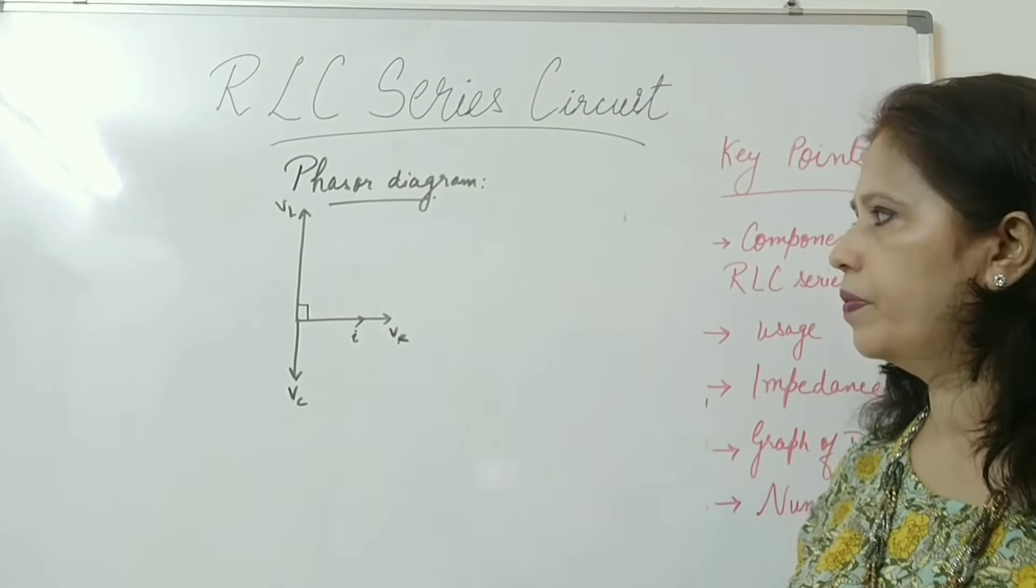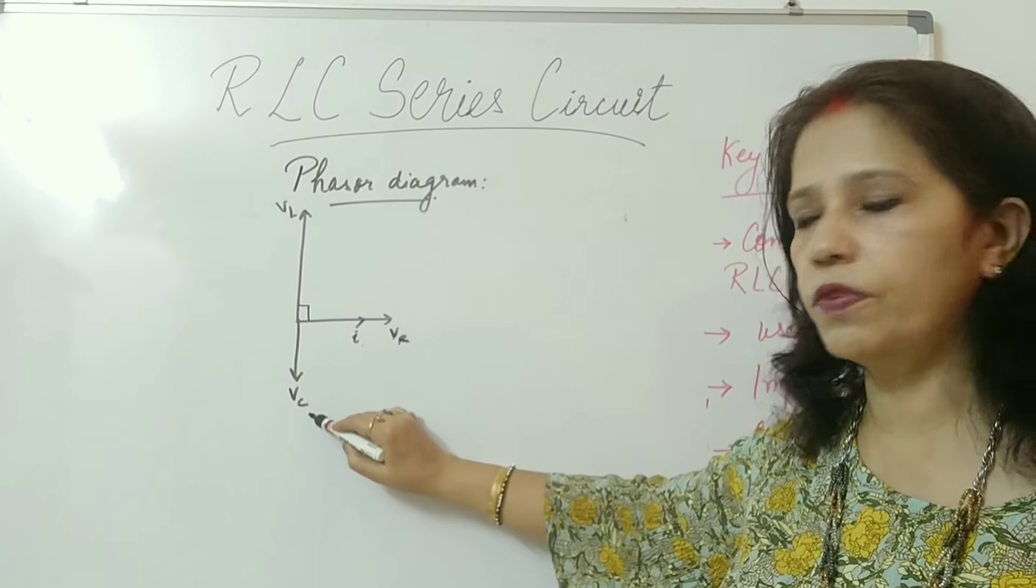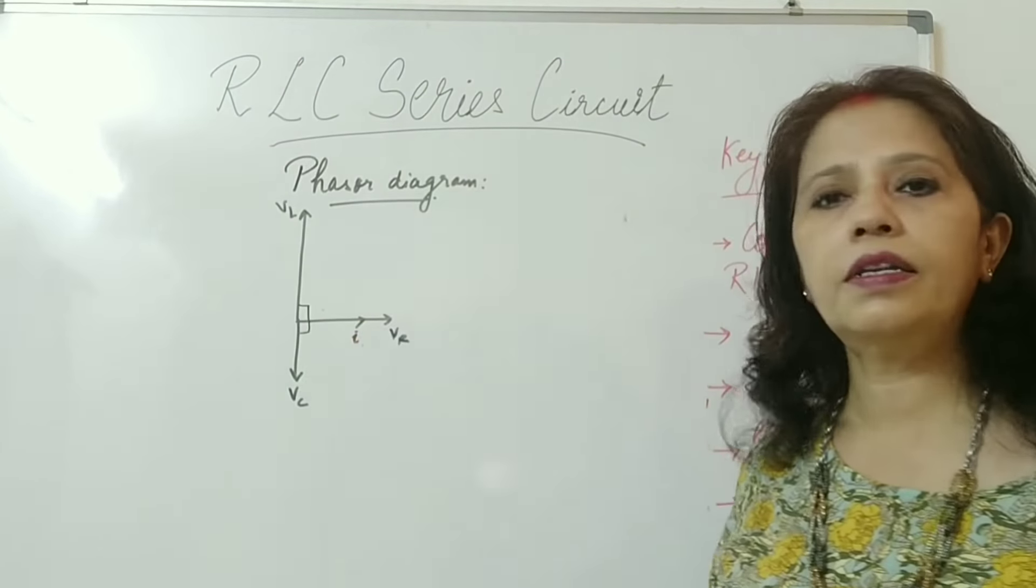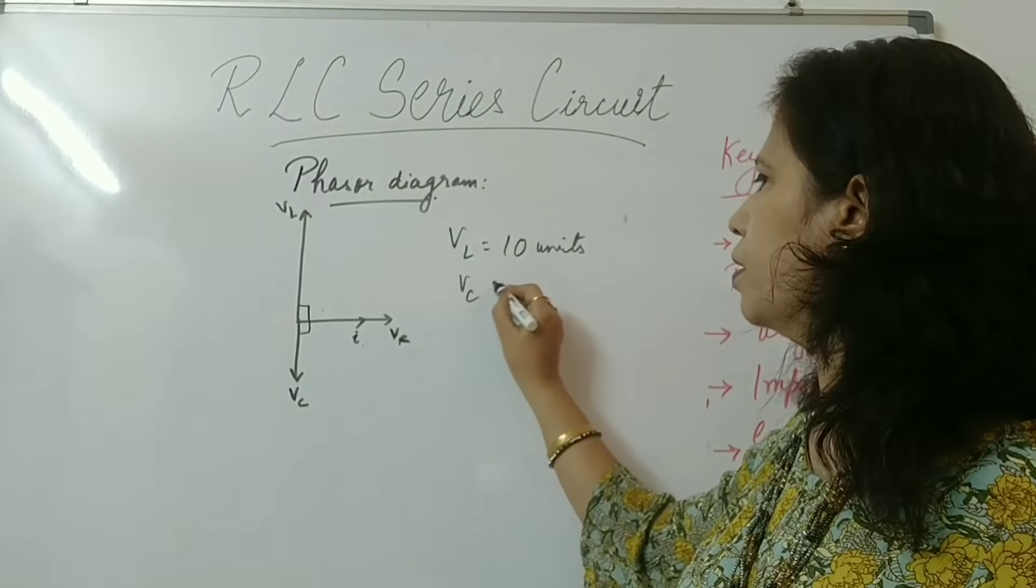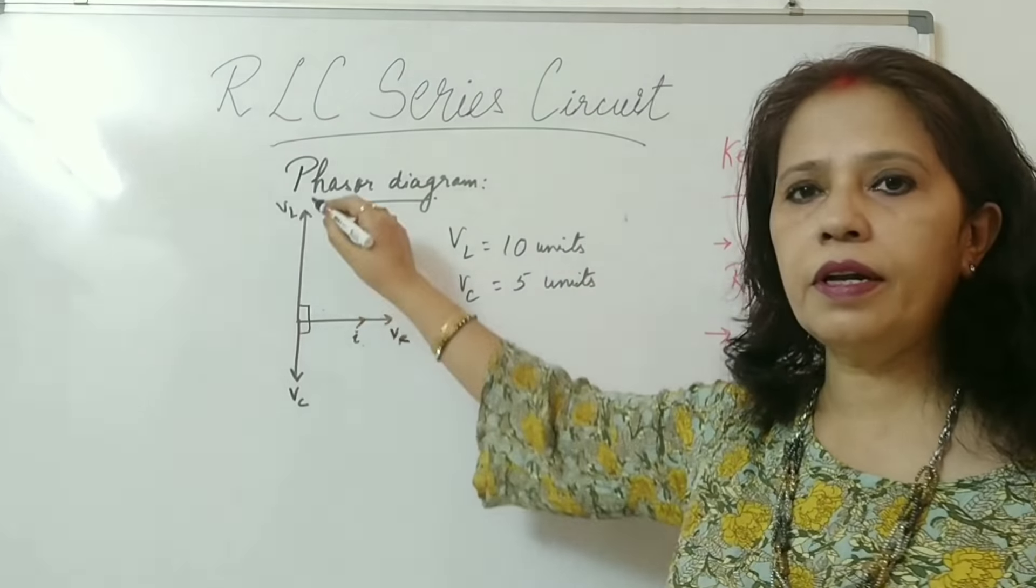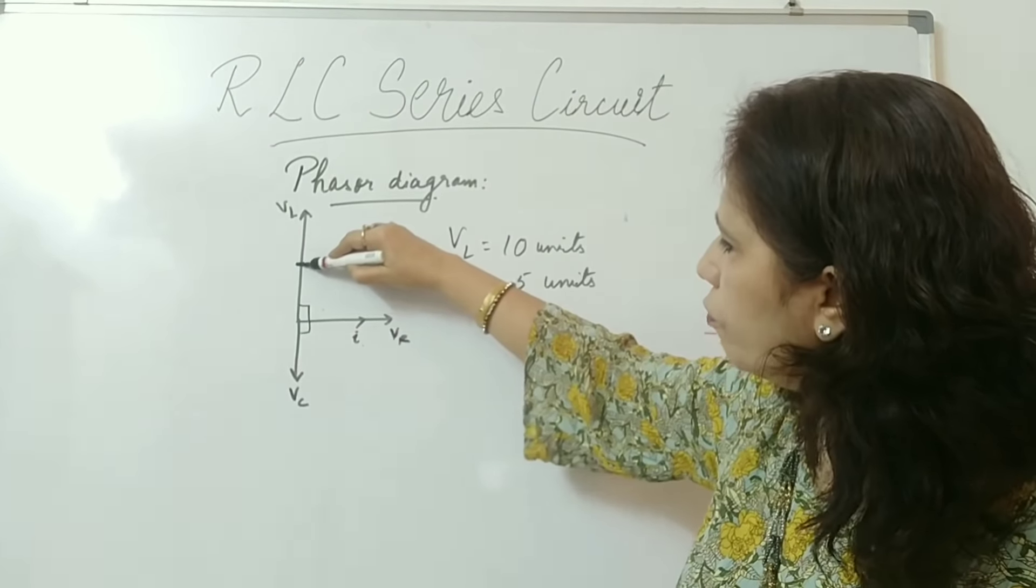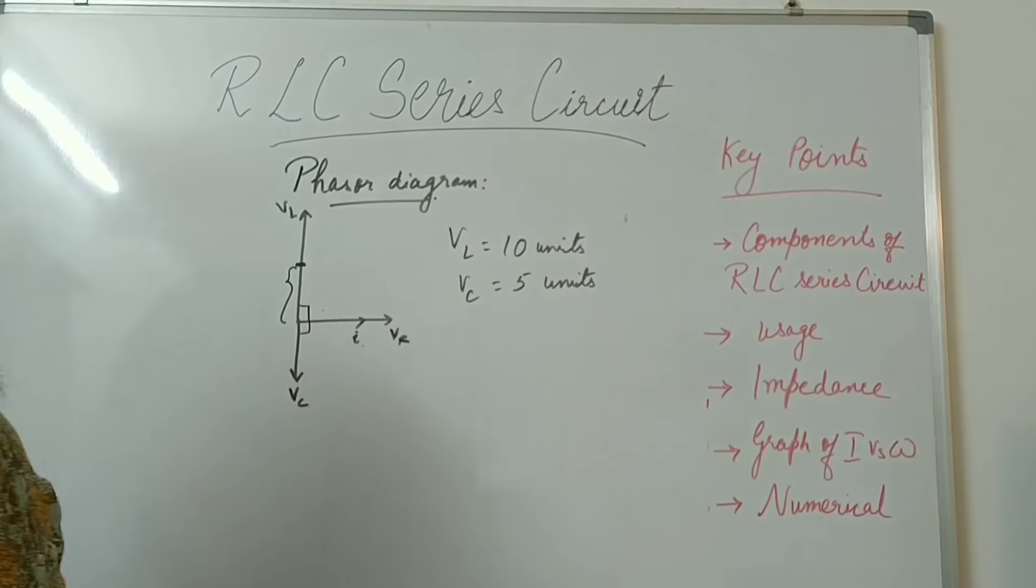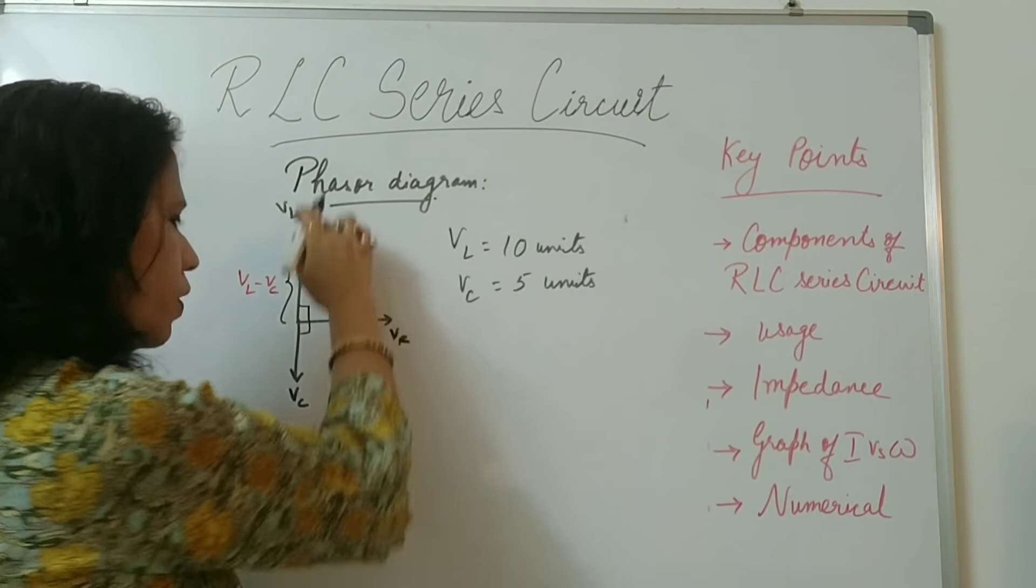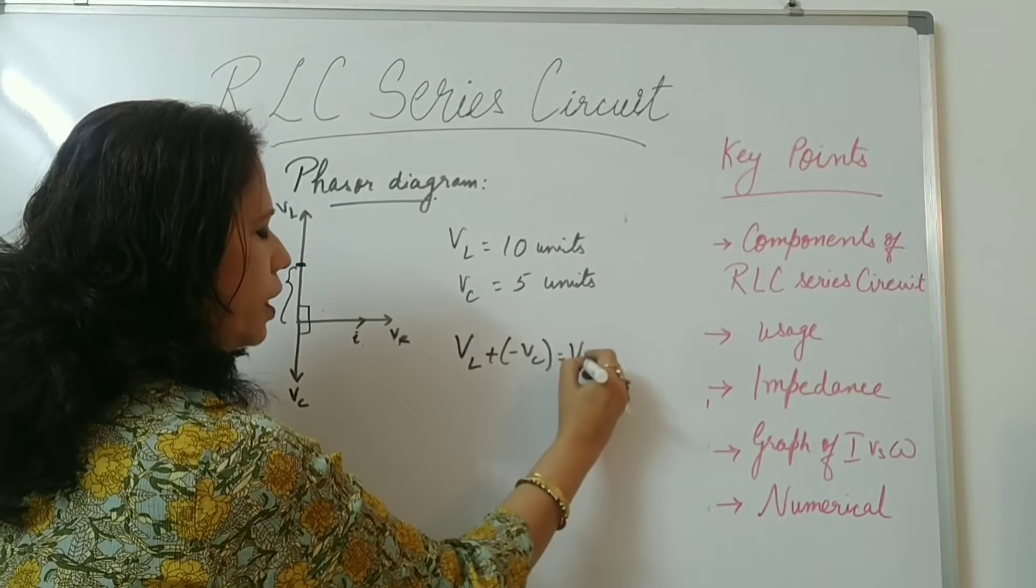Now let us see the phasor diagram. VR and I both are in same phase. VL is in positive region. VC is in the negative region. This is also 90 degree. And here this is also 90 degree. Now if VL is equal to 10 units and VC be 5 units. And now because they are lying in the same straight line, they can be added. So I can cut this 5 units on this VL to get VL minus VC. Because they are in the same straight line, this VL and VC can be added together to get VL minus VC.